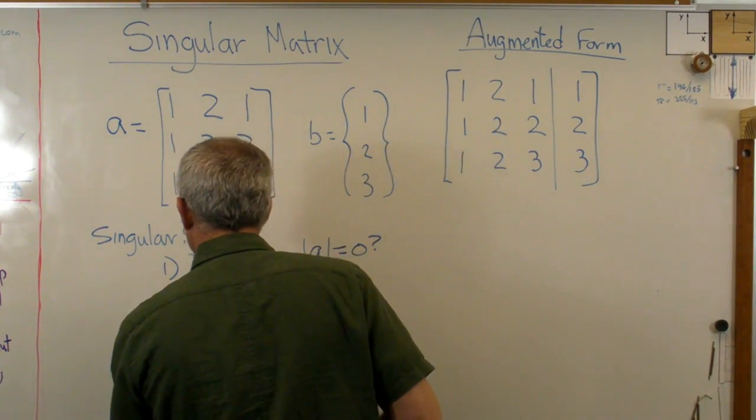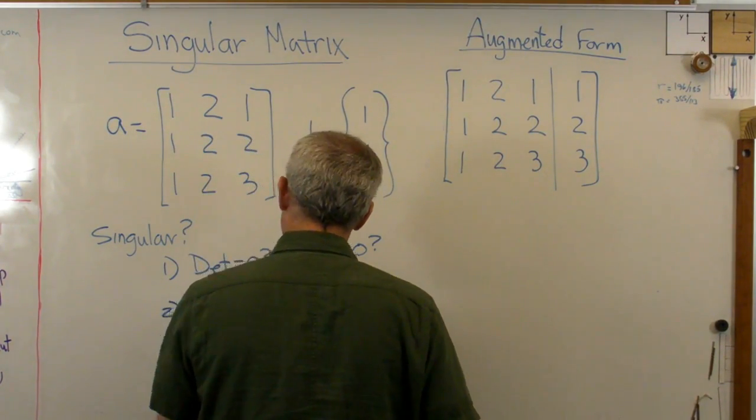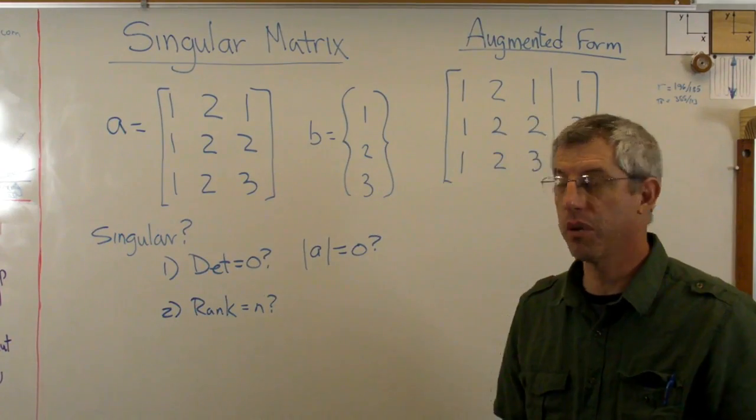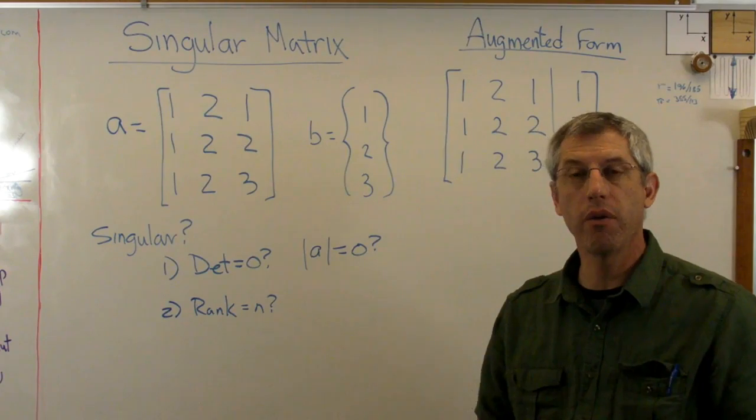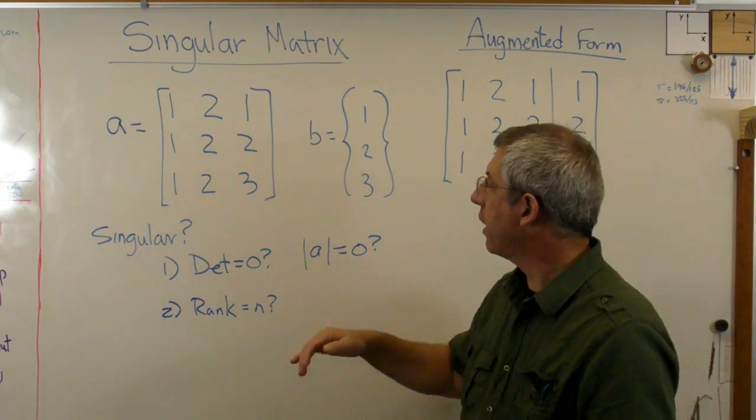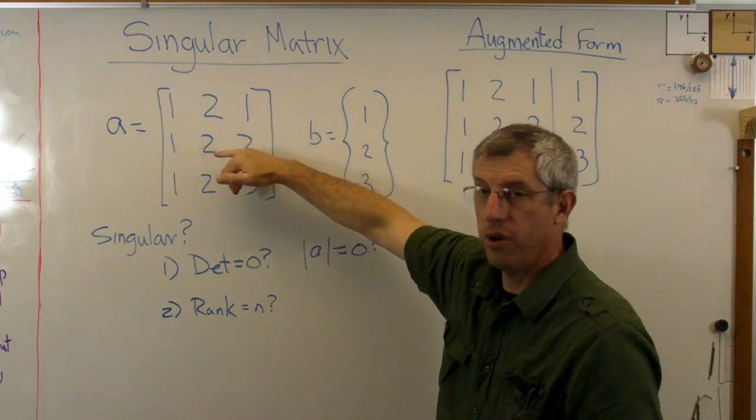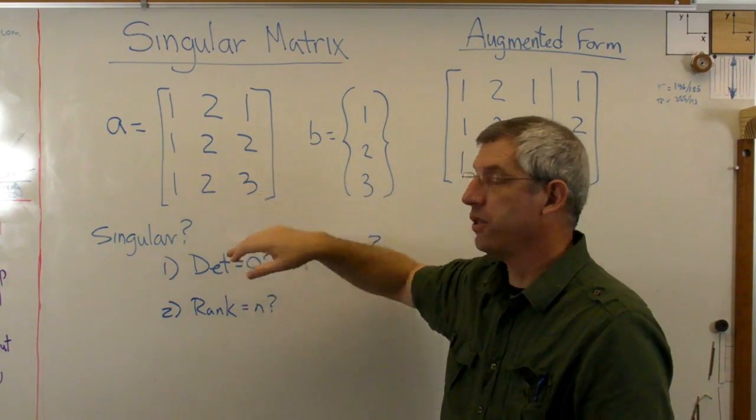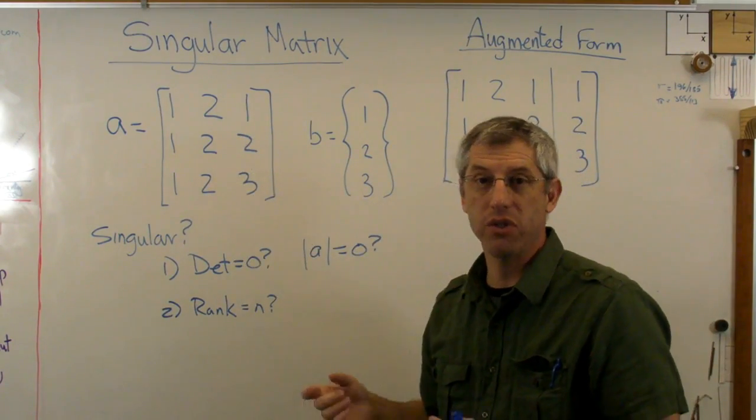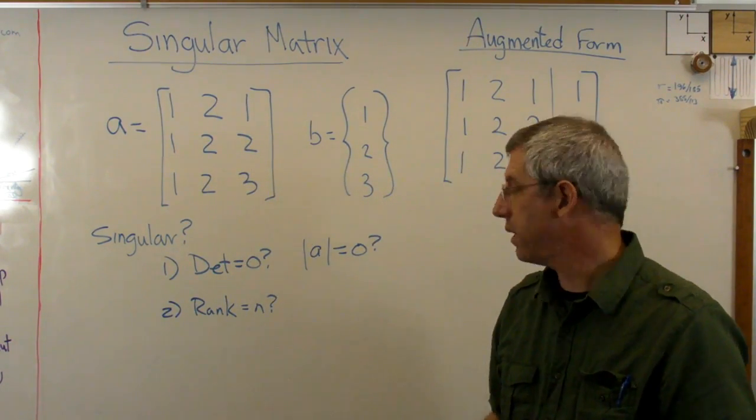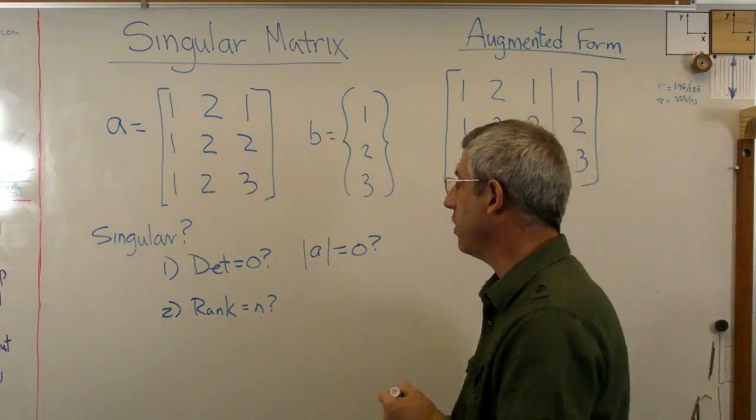Next thing you can do is, is the rank equal to n? Where n is the number of rows and the number of columns. So rank tells you the number of unique equations you've got here. Since this one I know is singular, it turns out there's only two unique equations. The third one is a combination of the other two. The rank of this matrix is two, even though n is three, so that's not going to work. But if the rank equals n, then that means the determinant is not equal to zero, and you're good to go.